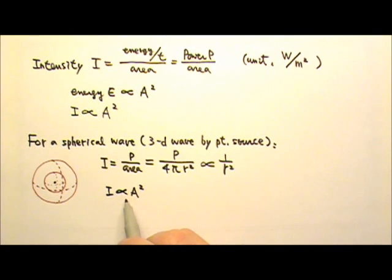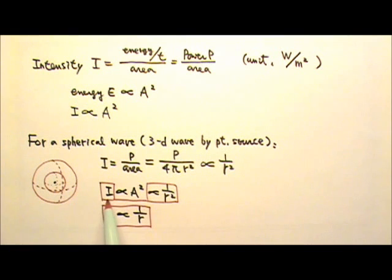Since the intensity is also proportional to the amplitude squared, and it is proportional to 1 over r², that means I can take square root on both sides. The amplitude is proportional to 1 over r. So for spherical waves, the intensity is proportional to amplitude squared, proportional to 1 over r², and the amplitude is proportional to 1 over r.